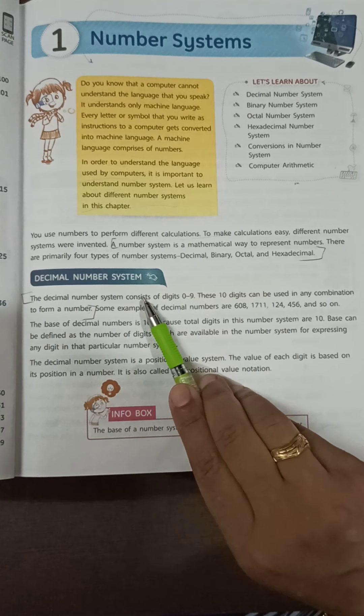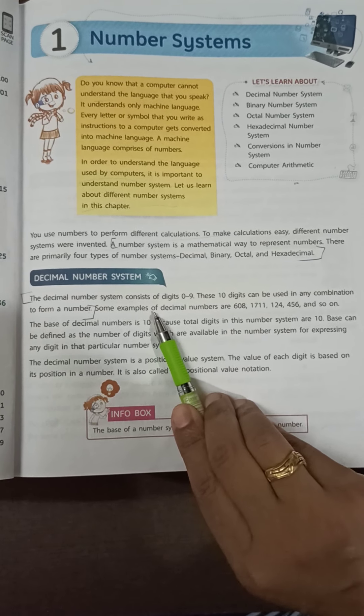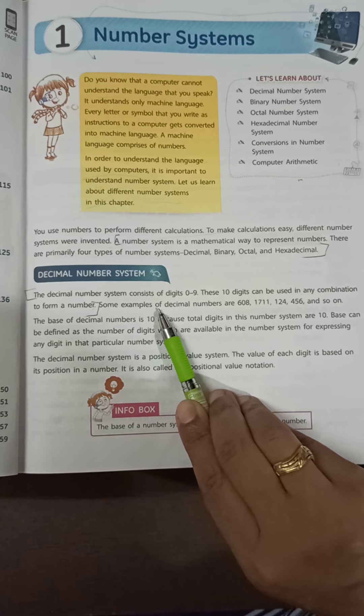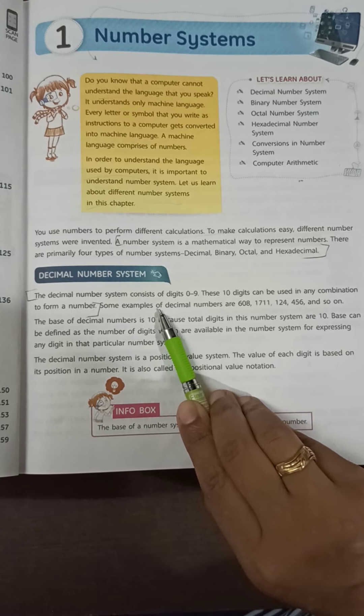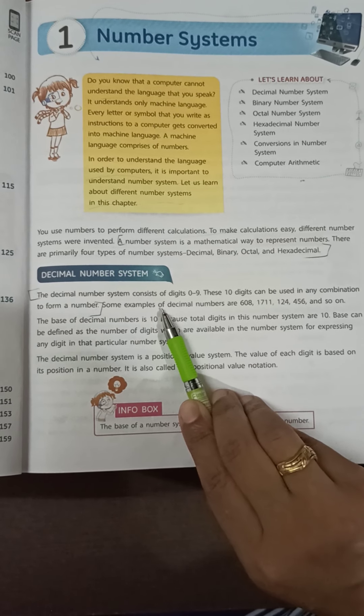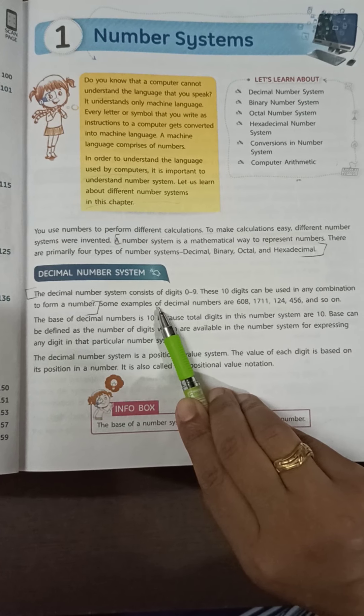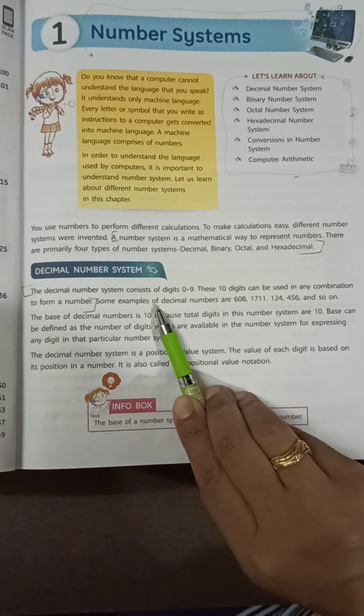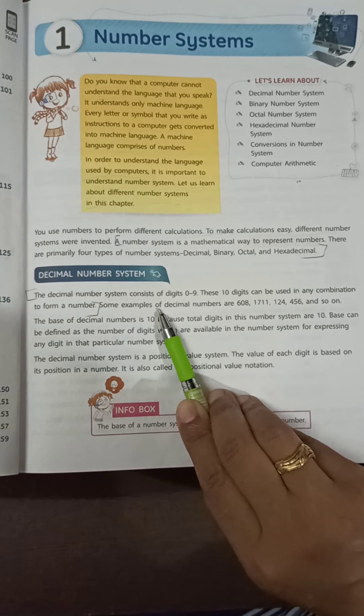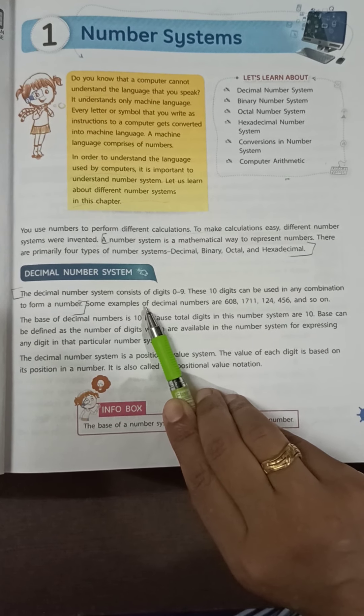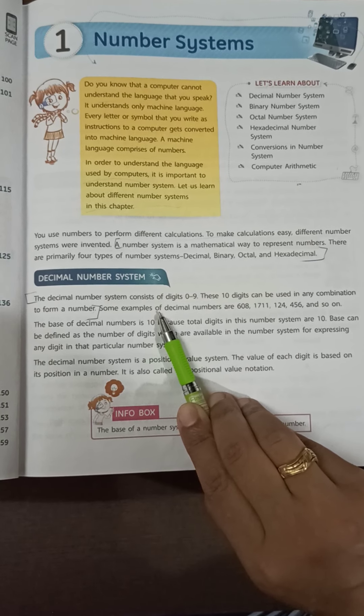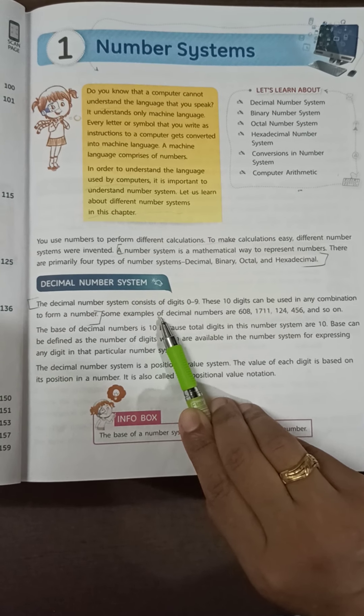The first is decimal number system. The decimal number system has 10 digits represented by 0 through 9. Any decimal number can be represented by these digits, and since there are 10 digits, the base or radix of these numbers is 10.